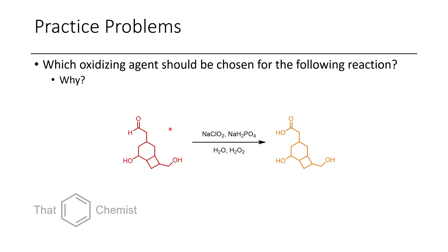If we use something like DMP, we'd be able to selectively oxidize this alcohol to the aldehyde or ketone without the aldehyde reacting. But with the Pinnick oxidation, we can further oxidize the aldehyde without touching the alcohols at all. With these mild tools at our disposal, we can selectively modify molecules exactly the way we want to. This is why it's important for organic chemists to develop new reactions that complement existing ones in milder and milder fashions, so that we can get selective transformations.